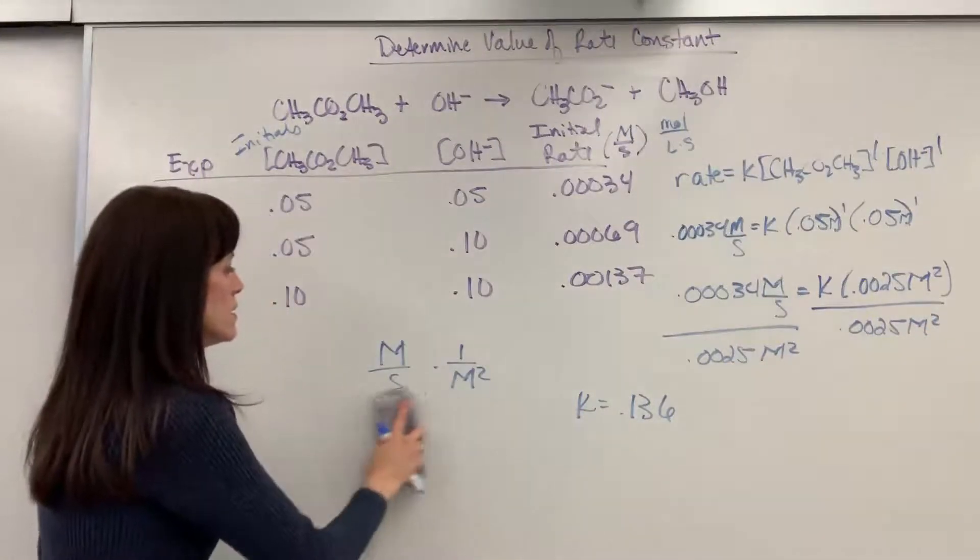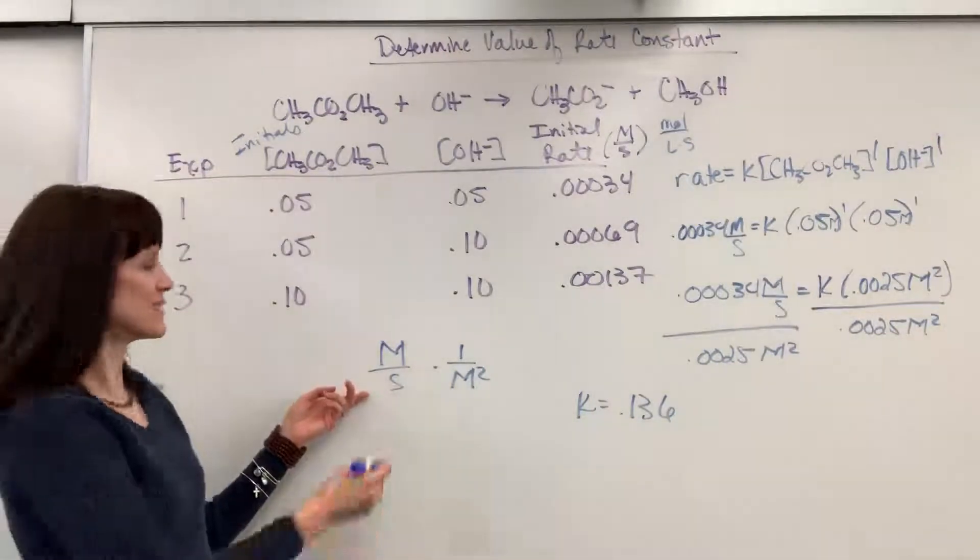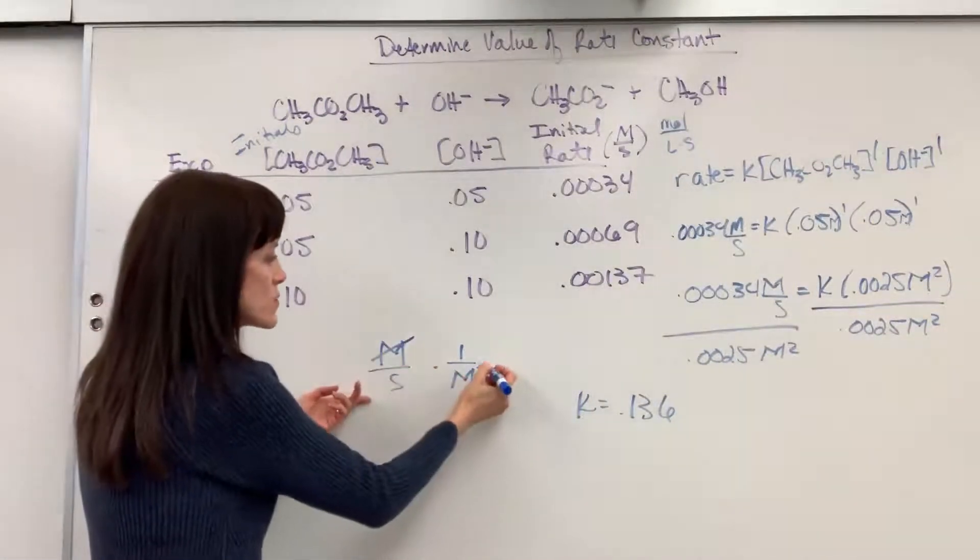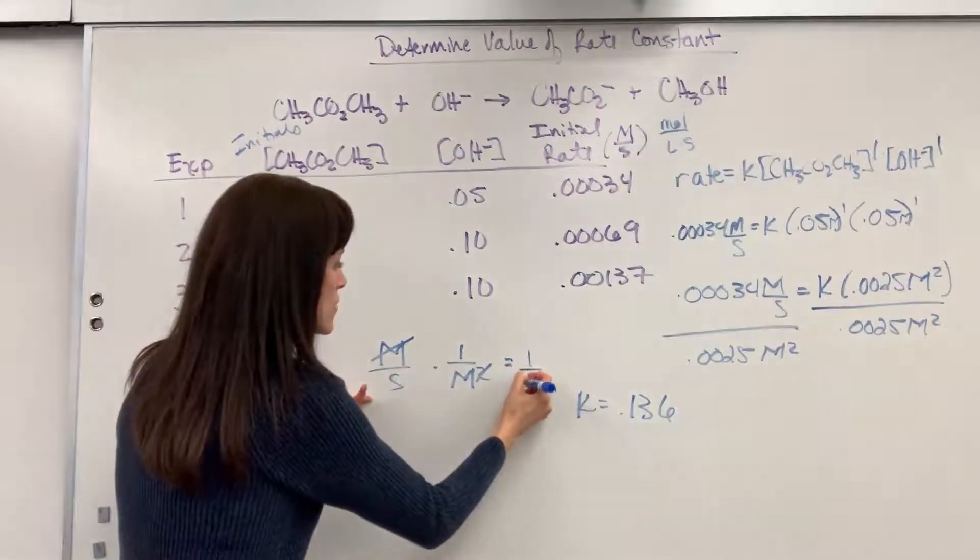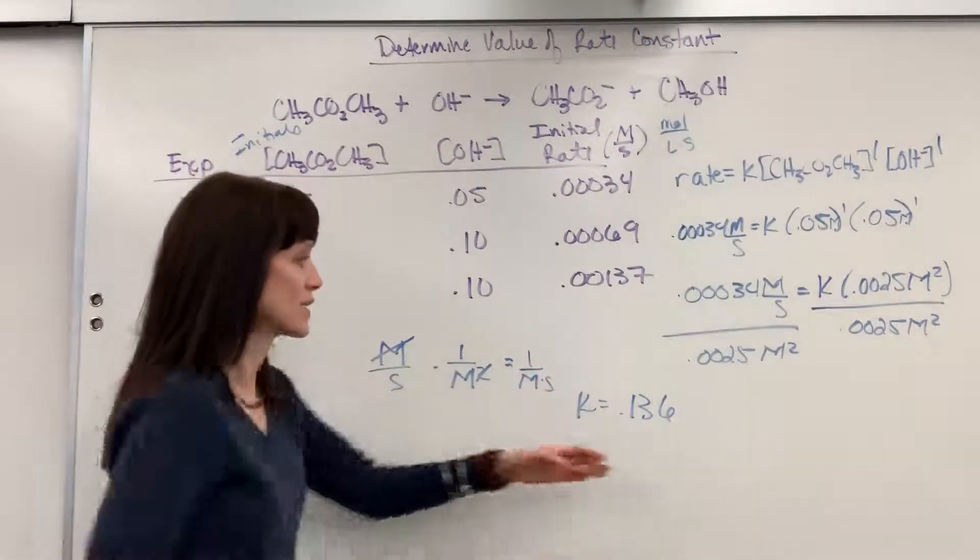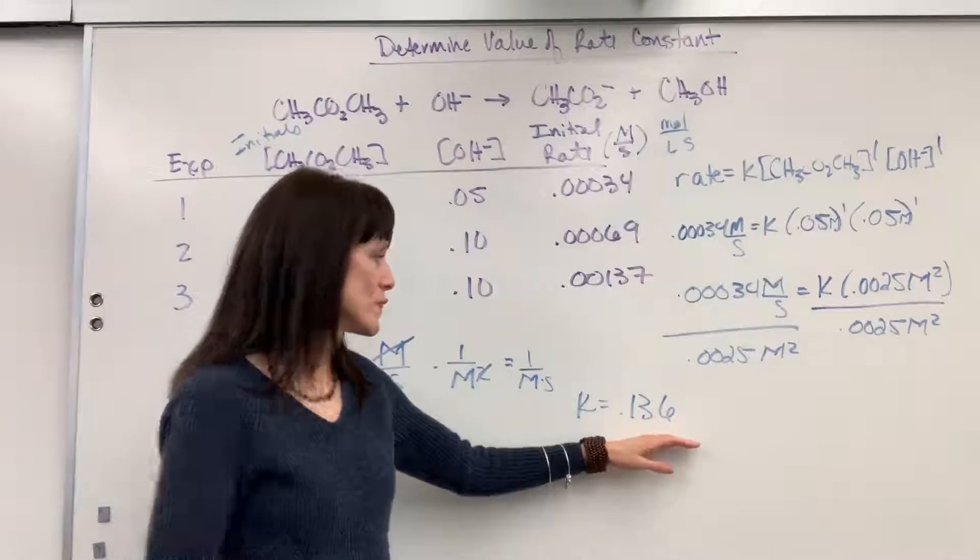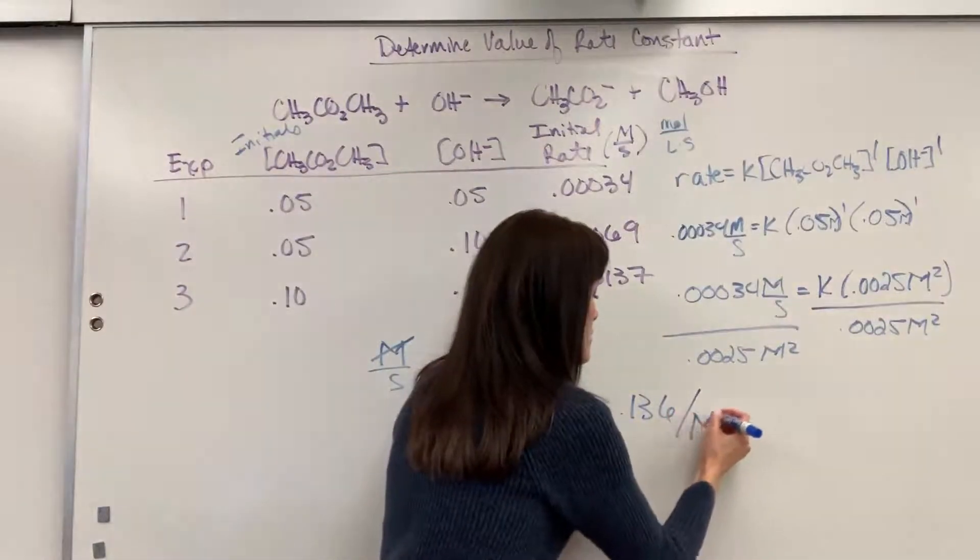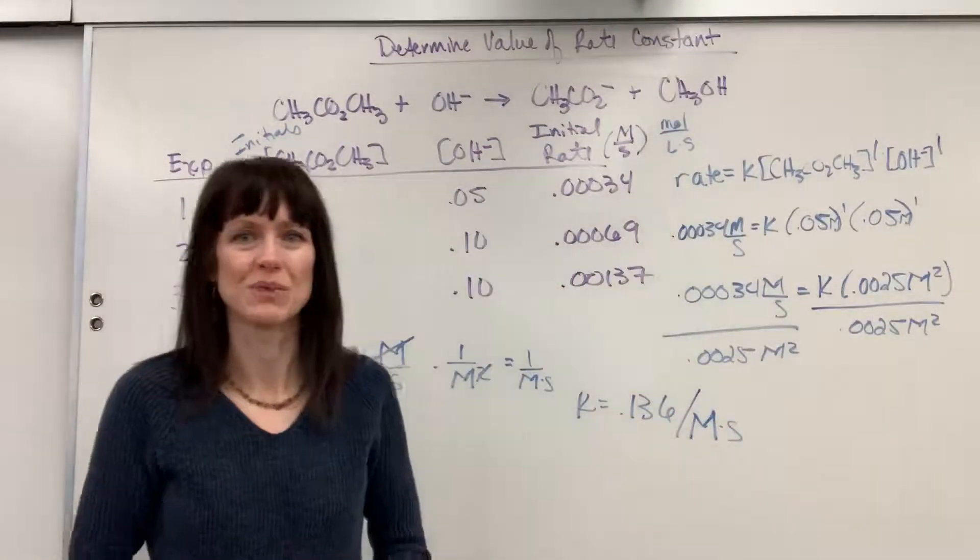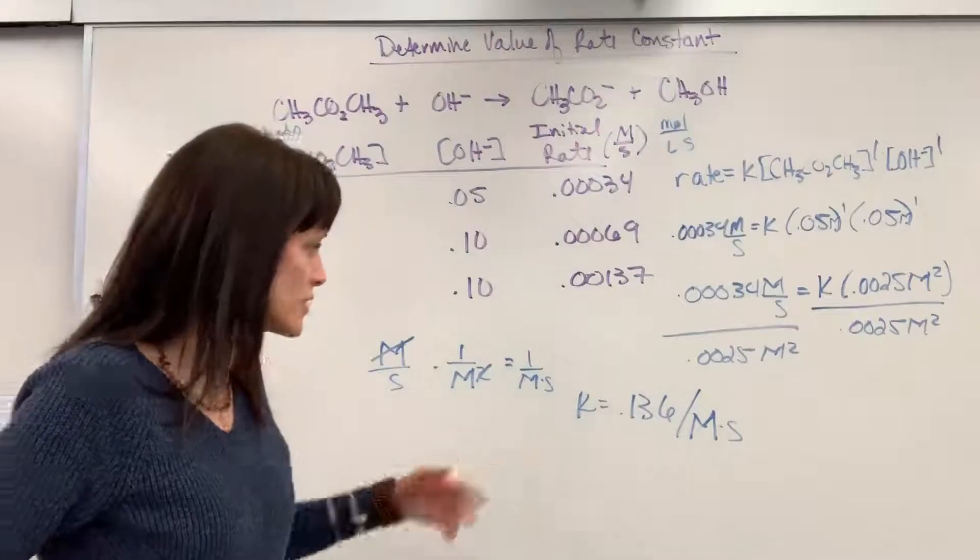There we go. Now watch this. Molarity cancels one of those molarity and that will give me 1 over molarity times second. So this unit is 0.136, 1 over molarity times second. So that's your answer.